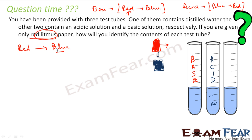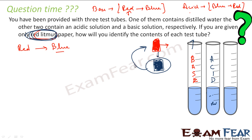So to summarize: with one red litmus paper, I first identified the base (it turned the paper blue). That same paper, now blue, was used to identify the acid (it turned the paper red). The last remaining test tube by elimination is neutral. This is how we can identify all three using just one piece of litmus paper.